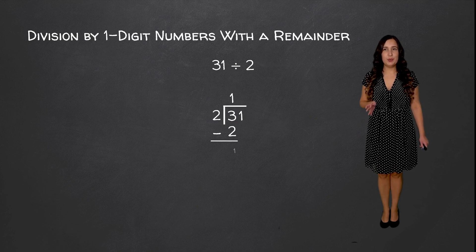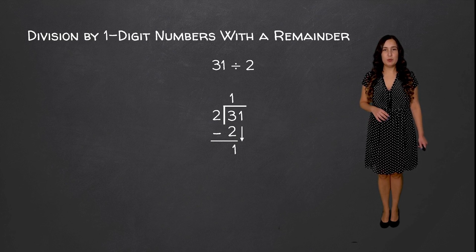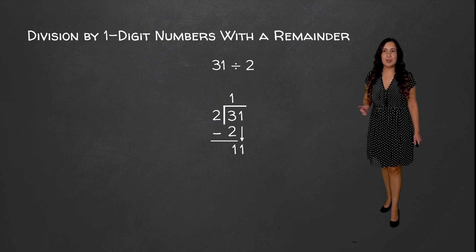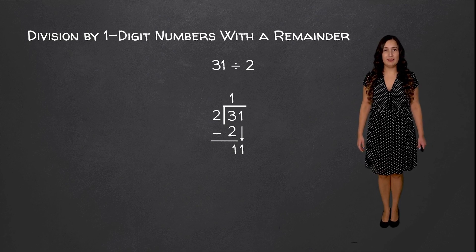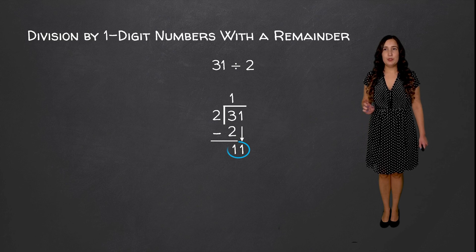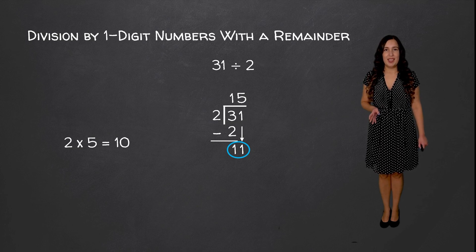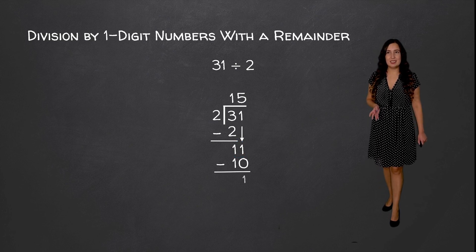3 minus 2 is equal to 1, and to continue dividing we're going to bring down our next digit which is 1. Now after we bring down the 1 we have an 11 here, and we have to see how many times does 2 go into 11. 2 goes into 11 5 times because 2 times 5 is equal to 10. So we're going to write our value here and then subtract. 11 minus 10 is equal to 1.